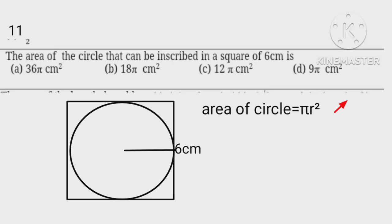Area of circle equals pi R squared equals pi into 3 squared equals 9 pi.